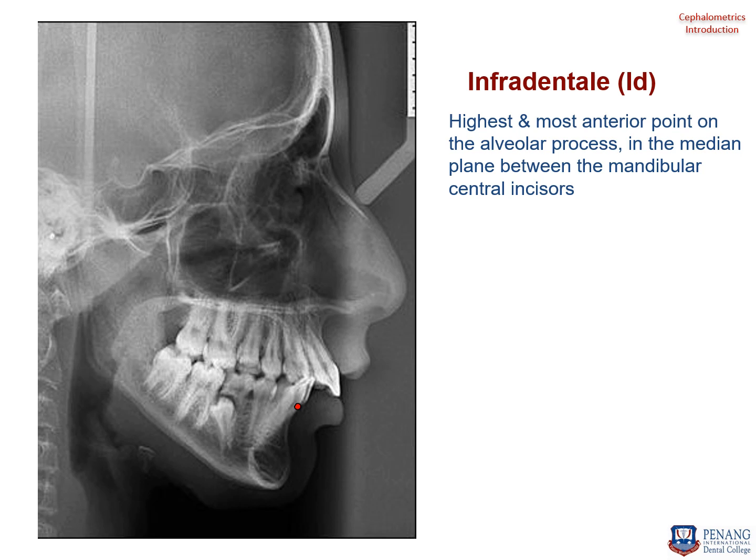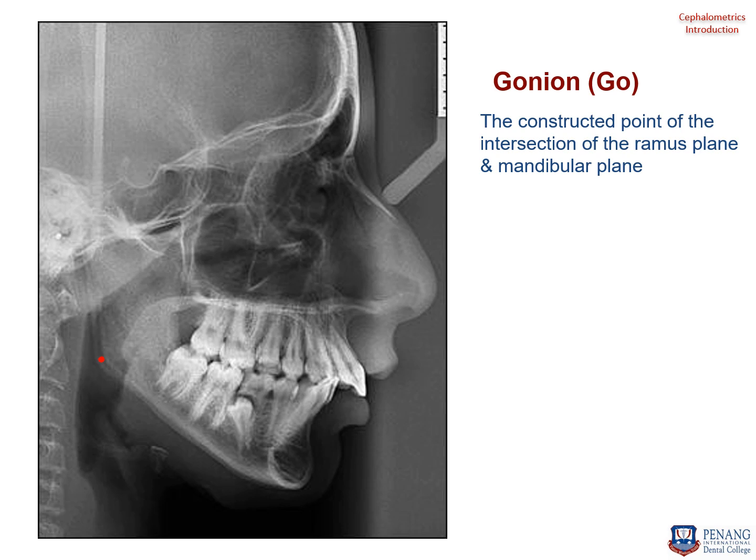Infradentale is the highest and most anterior point on the alveolar process of the mandibular central incisors. Gonion is a constructed point on the ramus of the mandible — because the ramus has a medial and lateral surface, you find the midpoint between them, or locate the angle of the mandible. It can also be constructed by the intersection of the ramus plane and the mandibular plane.